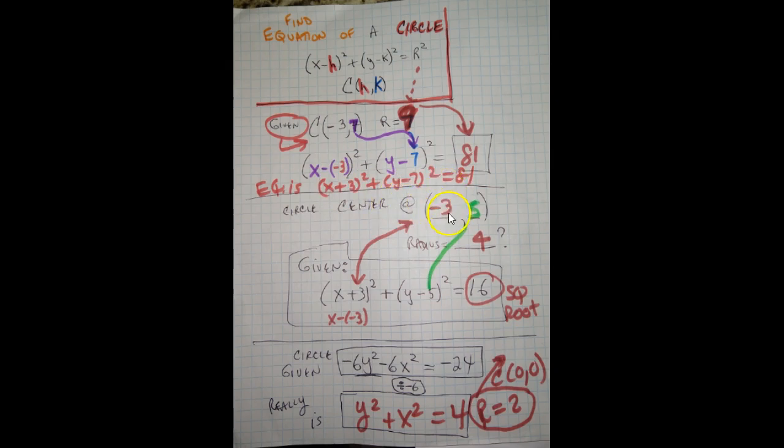So if the circle was centered at negative 3, 5, and the radius was 4, we'd have x plus 3 squared, y minus 5 squared, and 4 squared is 16. Notice it's x minus negative 3 right there.